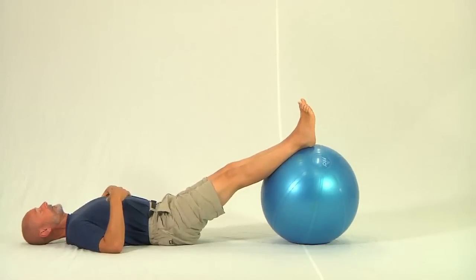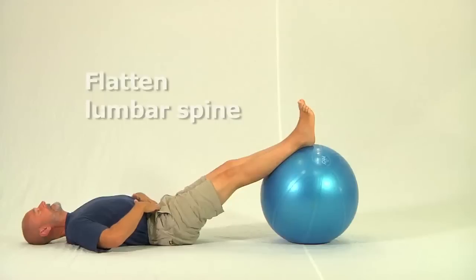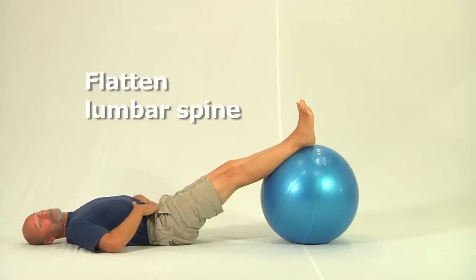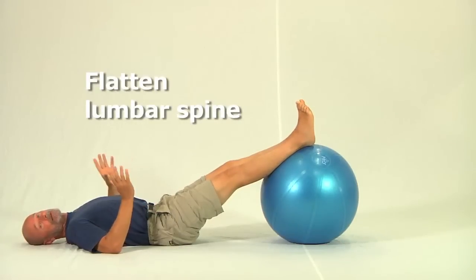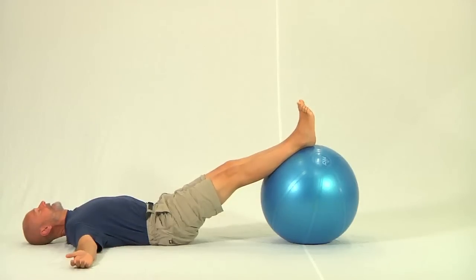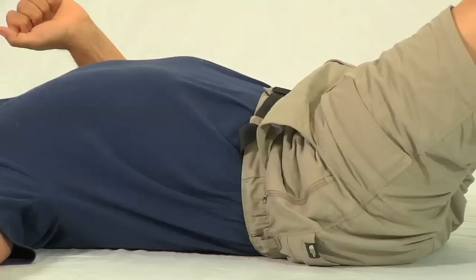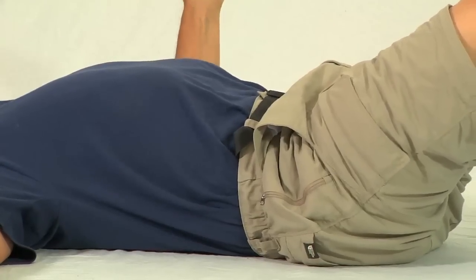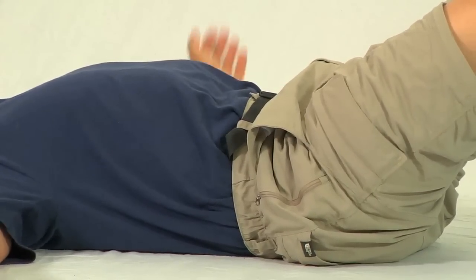The first thing that we do, and this is not at all obvious just from watching that demonstration, is we flatten the lumbar spine onto the floor. We do that by using that same tail tucking cue that we were speaking about in our very first exercise. I'll do that now in an exaggerated fashion. Once in this position, flatten the lumbar spine as we spoke about before.